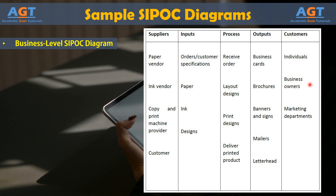Most of the time, a Six Sigma team won't deal with a business-level SIPOC diagram. However, if the team includes members from outside the division or company, such as vendors or consultants assisting with an improvement, then starting with a high-level diagram can help those outside of the business understand the overall goals of the company.